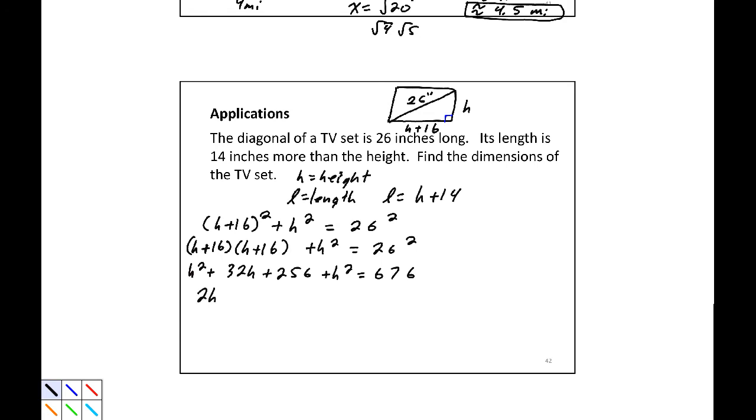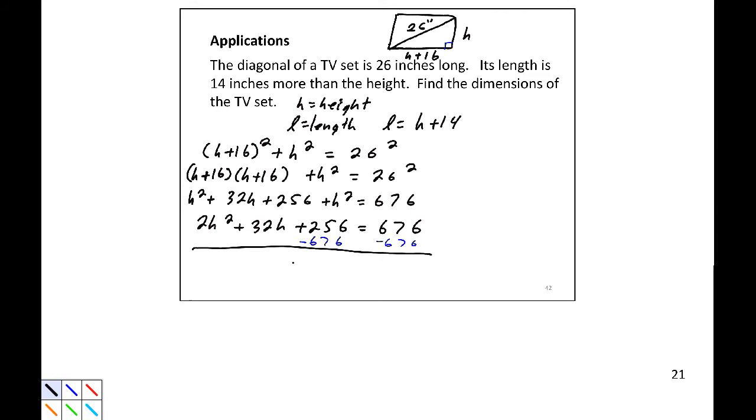Combining terms, we have 2h squared plus 28h plus 196 equals 676. Now before we can actually apply any of our techniques, we need to get this equal to zero. So we'll subtract 676. So 2h squared plus 28h minus 480. Now we can actually divide every term by 2, so that we have h squared plus 14h minus 240 equals 0.